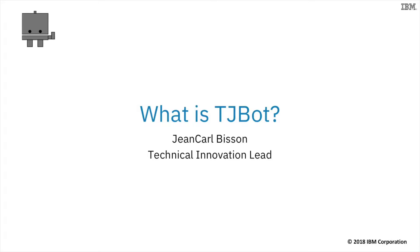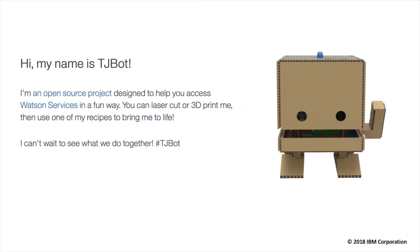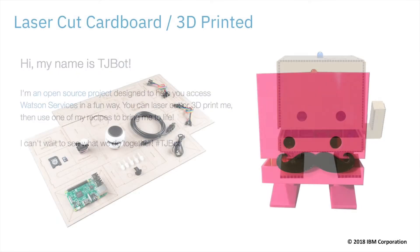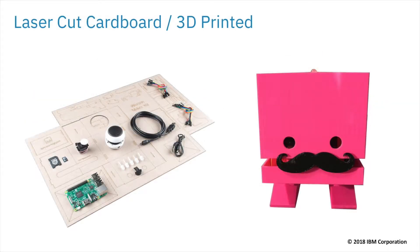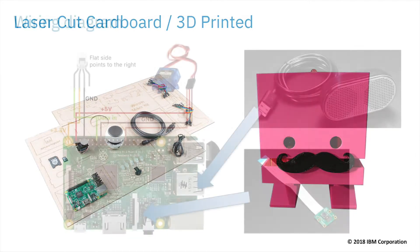In this course, you will be introduced to the open-source project called TJ Bot, created by IBM Research. TJ Bot is the first Watson maker kit designed to showcase fun ways to incorporate IBM Watson services into physical objects such as a robot. The initial cardboard design is available to laser cut and customize. You can also 3D print a plastic version. Both have been designed to be customized and extended. Check out the community contributed recipes for additional inspiration.